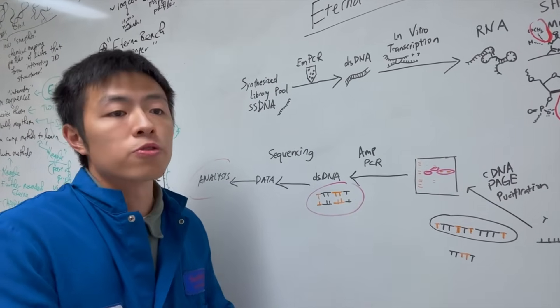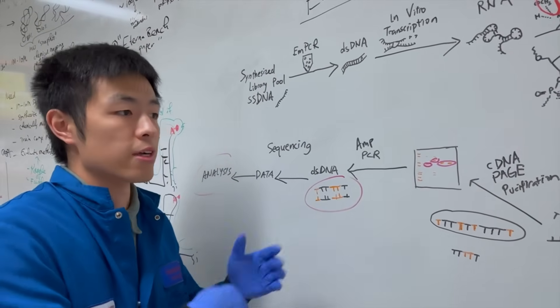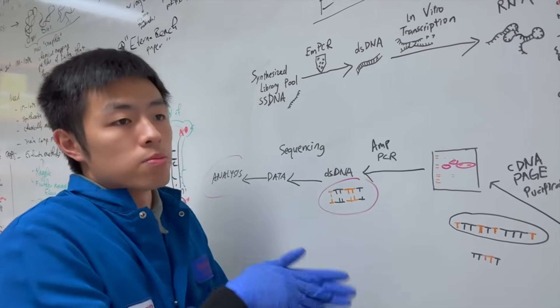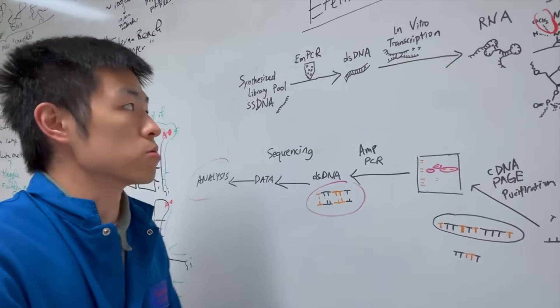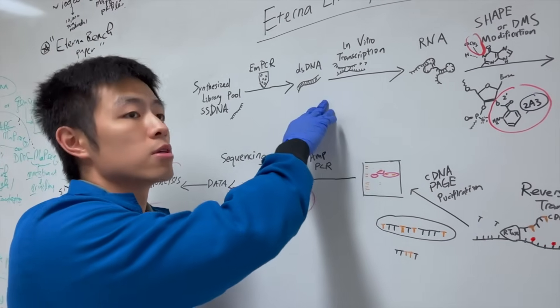So, the purpose for that is to quarantine different designs so they can have their own double-stranded DNA generation. So, after emulsion PCR, we get our double-stranded DNA.